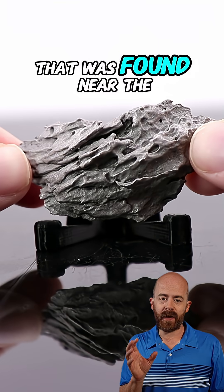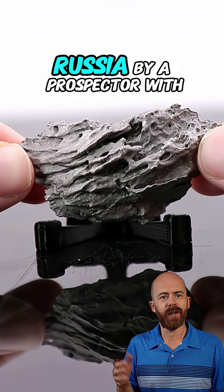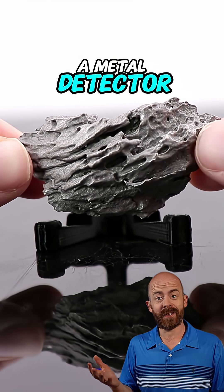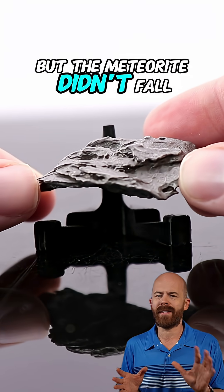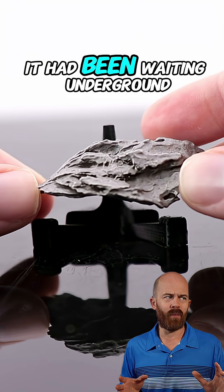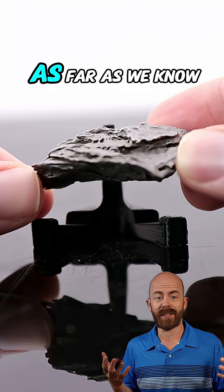Dronino is an iron meteorite that was found near the town of Dronino, Russia, by a prospector with a metal detector who was actually looking for battlefield artifacts. The discovery was made in the year 2000, but the meteorite didn't fall from the sky that year. It had been waiting underground for centuries, as far as we know.